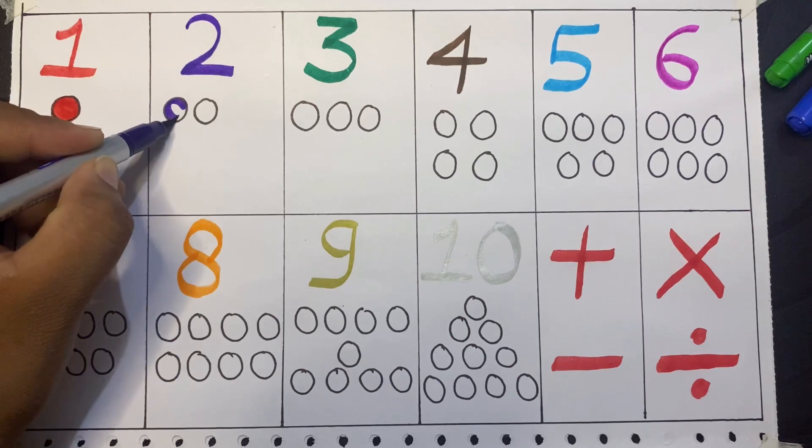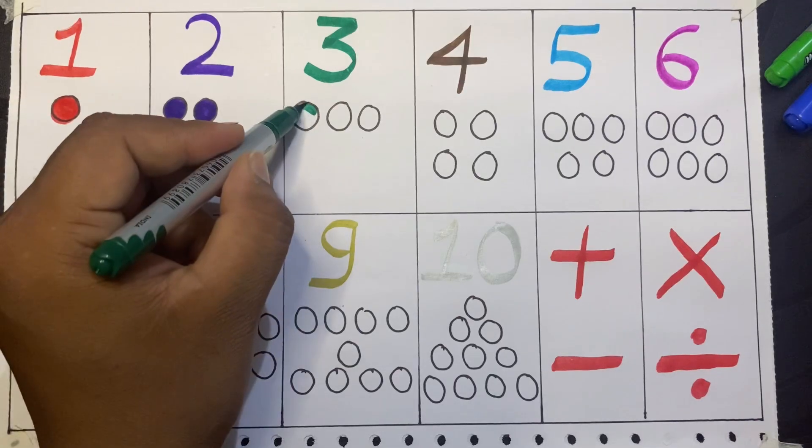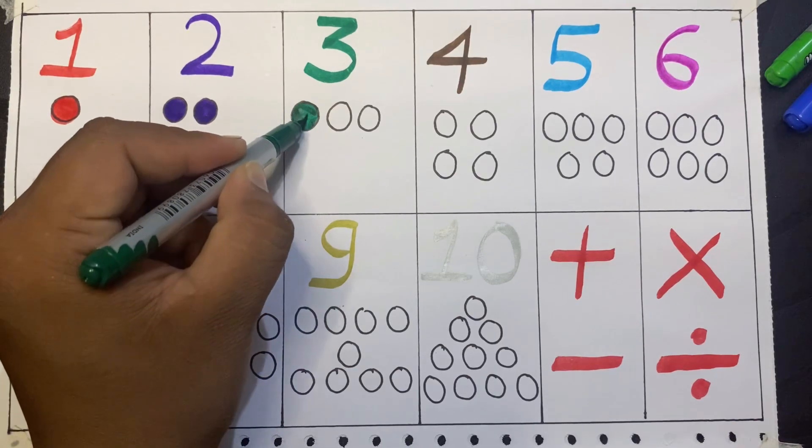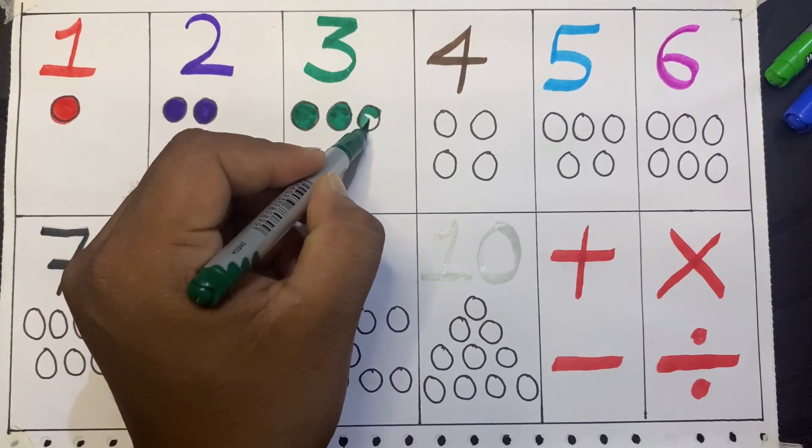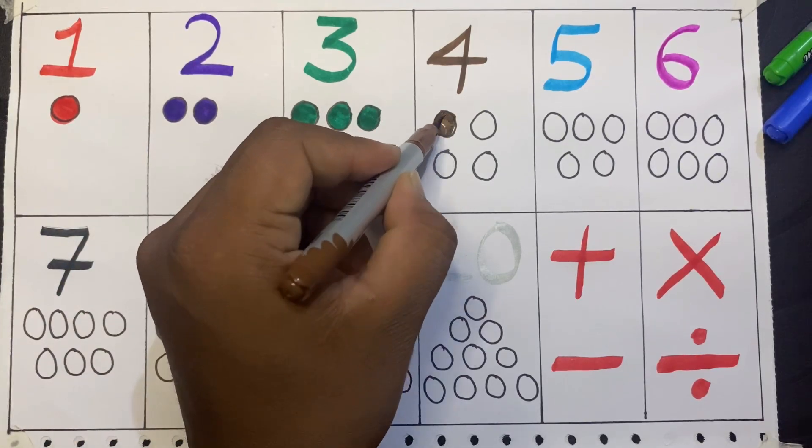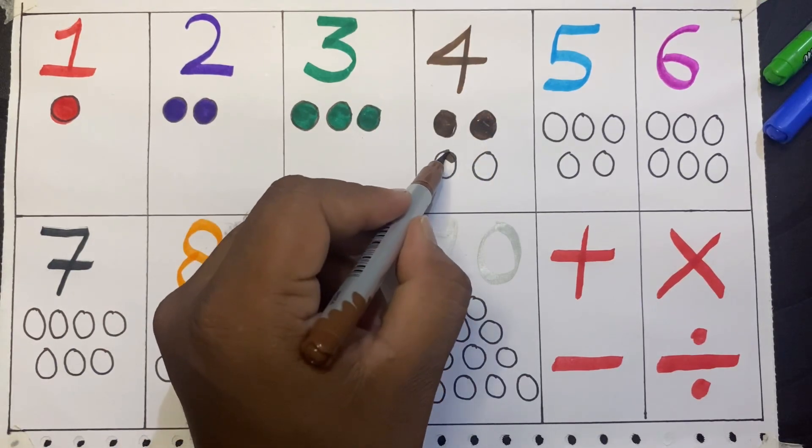1 red circle. 1, 2 - 2 purple circles. 1, 2, 3 - 3 green circles. 1, 2, 3, 4.